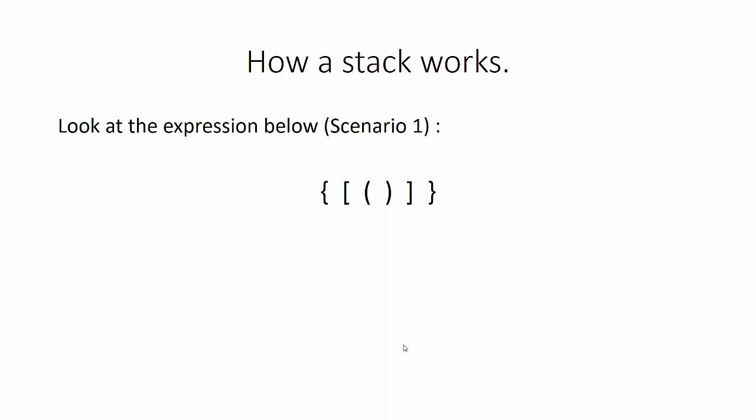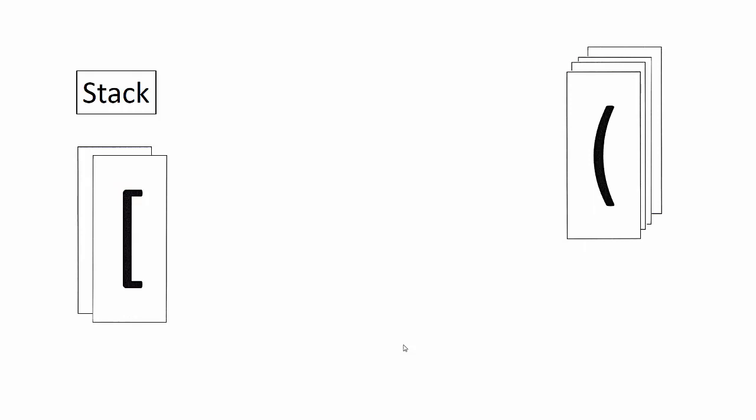Let's do a paper exercise on how this works. Here's our string: a left curly brace, a left square bracket, a left and right parentheses, a right square bracket, and a right curly brace. A computer can only look at one character at a time and compare two things. On the right-hand side is our input; on the left is our stack. The left curly brace is a left symbol — we put it on the stack. Then the left square bracket — a left symbol, we put it on the stack. Then the left parentheses — also a left symbol, we put it on the stack.